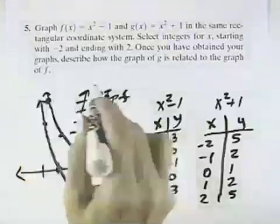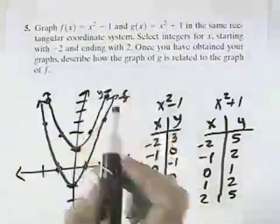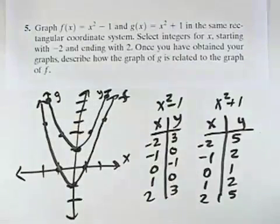And looking at the two, we can see that each point is 2 units above the points for g.